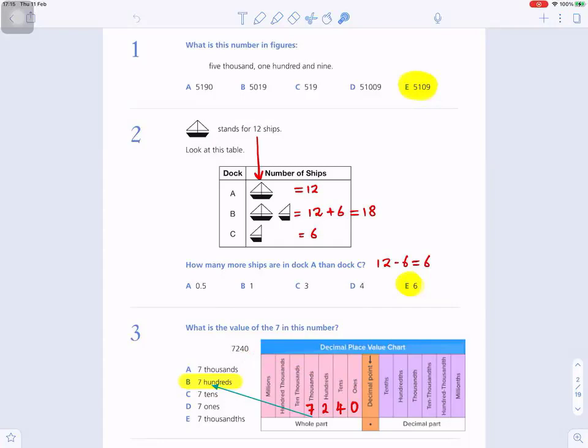What does the 7 represent? What's the value of the 7 in this? It represents 7,000, not 700. 7,000. So that would go in the 7,000, and that's how you do that type of question.